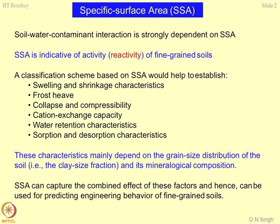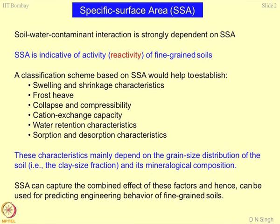Cation Exchange Capacity is primarily a physico-chemical phenomenon — physical, chemical, and mineralogical properties in combination are responsible for the exchange of cations a soil will exhibit. However, determination of CEC is a tedious task; there are different codes available, and following different codal procedures gives different results. CEC depends heavily on atmospheric conditions, particularly the pH of the soil, temperature, pressure, and their fluctuations. Therefore, researchers have utilized specific surface area to determine cation exchange capacity — this is one application of determining CEC from SSA.